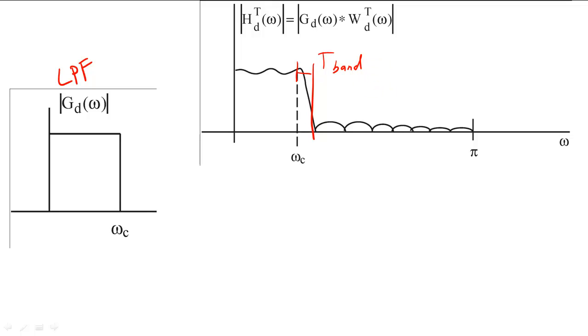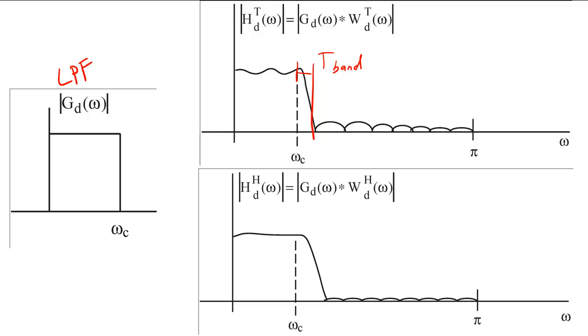If we used the Hamming window instead, the ripples would be reduced in the pass band and the stop band. However, the transition band would be widened by a factor of two.